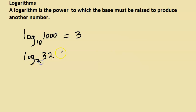Log 32 base 2 — we ask ourselves: 2 to which power gives us 32? 2 to the power of 5 gives us 32, so the answer is 5.